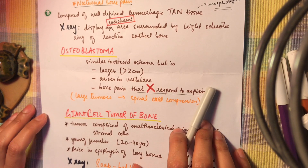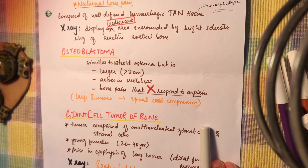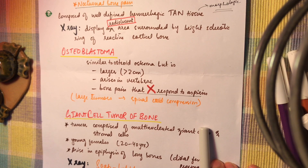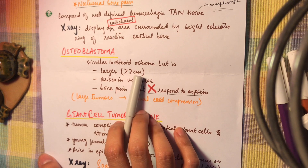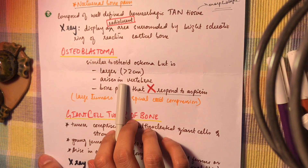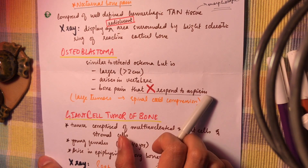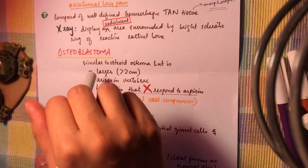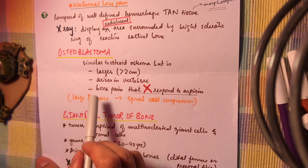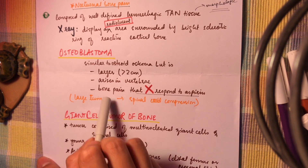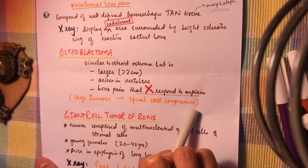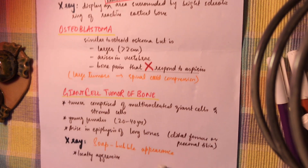Osteoblastoma is similar to osteoid osteoma with similar histologic features, but they differ clinically and radiographically. Osteoblastoma is larger — greater than 2 cm in diameter — and arises in the vertebrae. The bone pain in osteoblastoma does not respond to aspirin. Osteoblastomas may eventually become large enough to cause spinal cord compression.